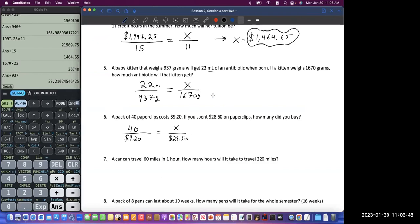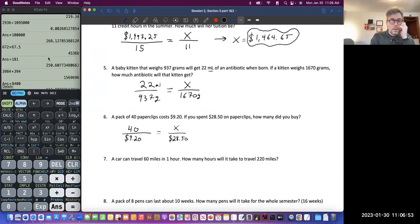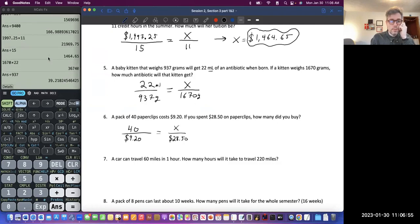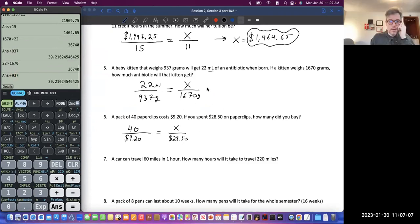Yeah. That makes sense. And does anyone remember how much it was? This poor kitten. I don't remember how much. 39.2. 22 times 1, 6, 7, 0 divided by 9, 37. 39.2.